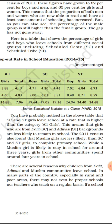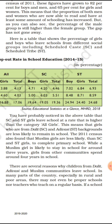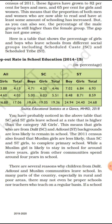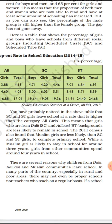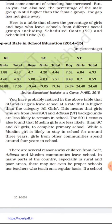Girls from Dalit and Adivasi backgrounds are less likely to remain in school. In the 2011 census, Muslim girls were found to be even less likely than SC/ST girls to complete primary school. Muslim girls tend to stay in school for around three years, while girls from other communities spend around four years in school. So the least amount of schooling was for Muslim girls.